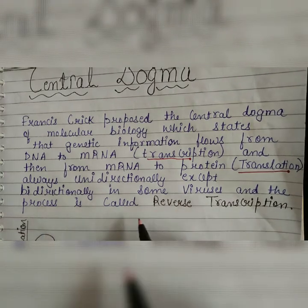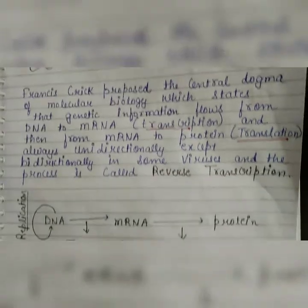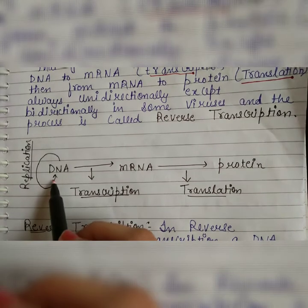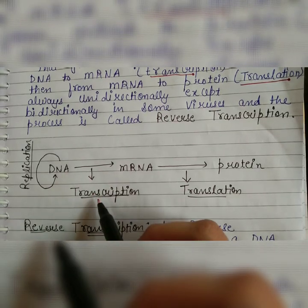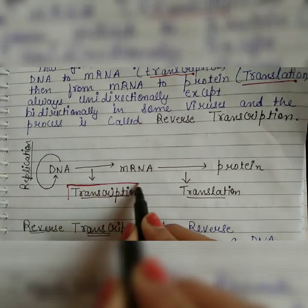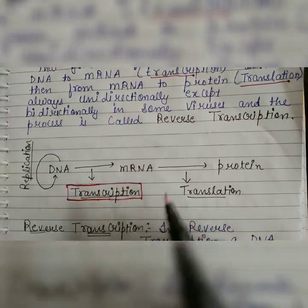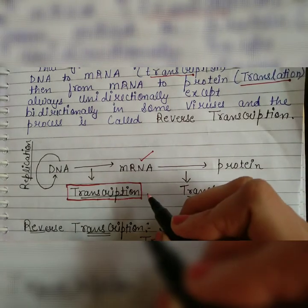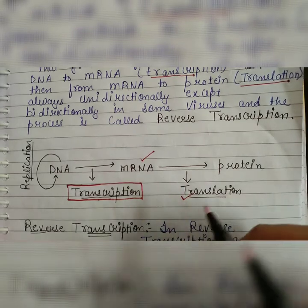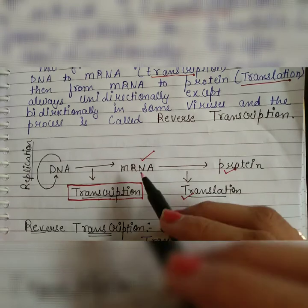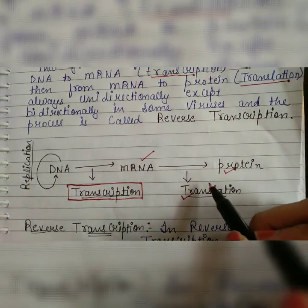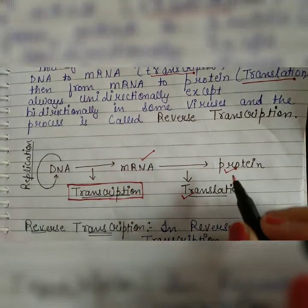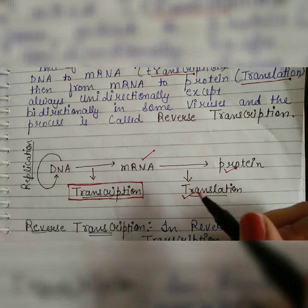Except bidirectionally in some viruses, and that process is called reverse transcription. In the central dogma: DNA undergoes replication. DNA to mRNA is called transcription, and mRNA to proteins is called translation. The whole process — DNA to mRNA to proteins — is called the central dogma.